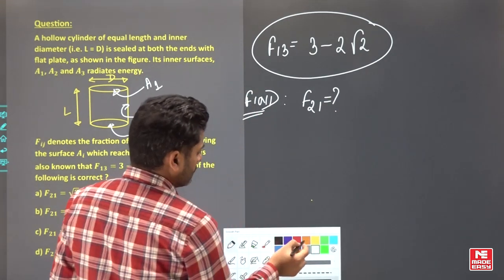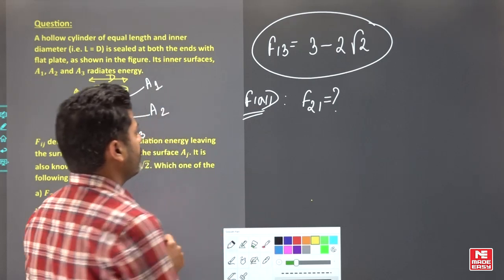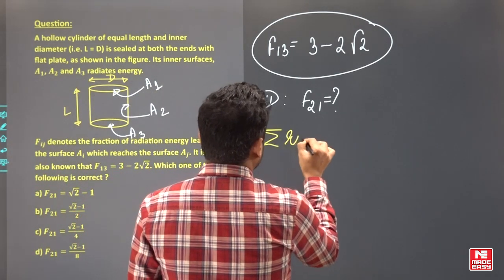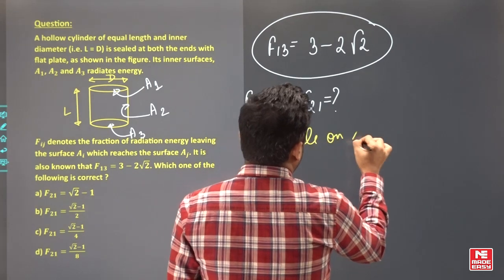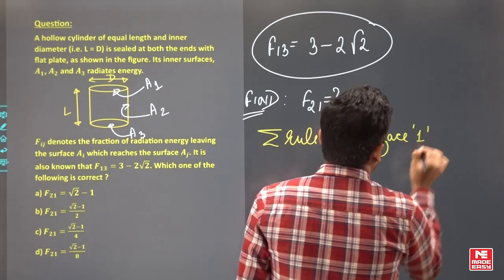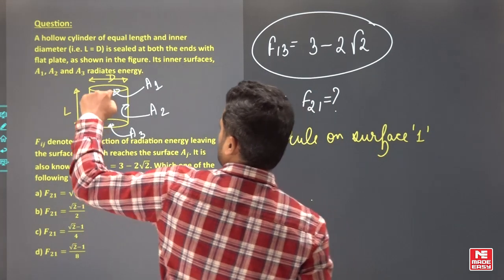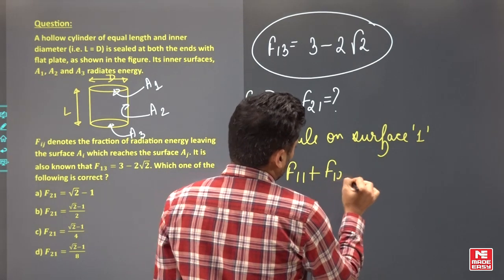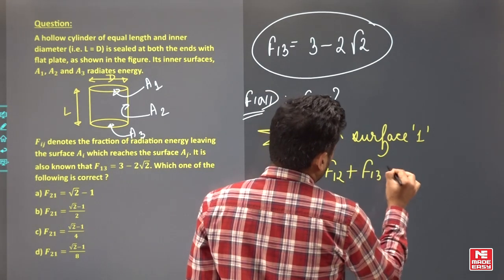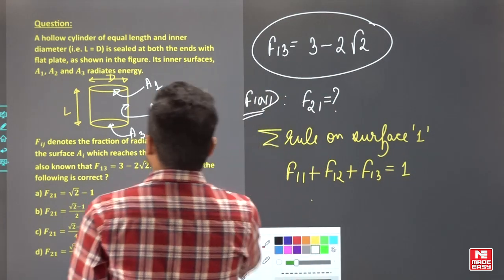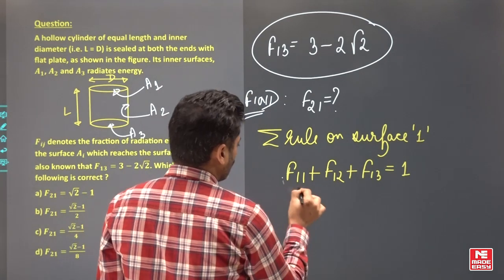So you can see that this view factor F13 is known, so I'm going to apply the summation rule on surface 1. What is the summation rule? F11 plus F12 plus F13 equals 1.